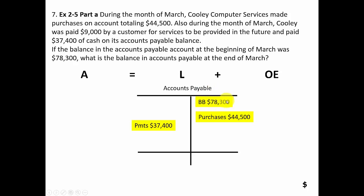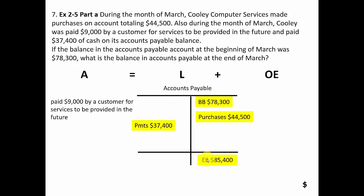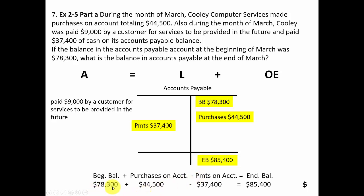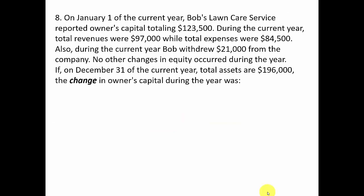The beginning balance in accounts payable was seventy-eight thousand three hundred dollars — a normal credit balance. Adding purchases of forty-four thousand five hundred and subtracting payments of thirty-seven thousand four hundred gives an ending accounts payable balance of eighty-five thousand four hundred dollars. In linear format: beginning balance plus purchases on account minus payments on account equals ending balance of eighty-five thousand four hundred.